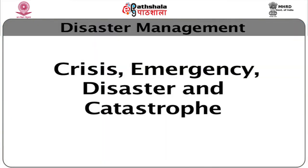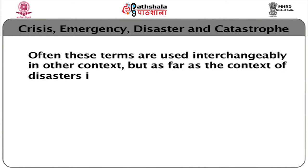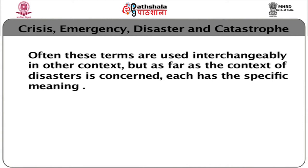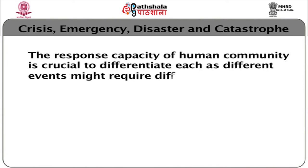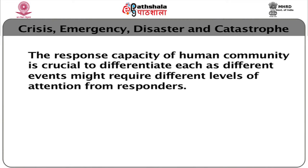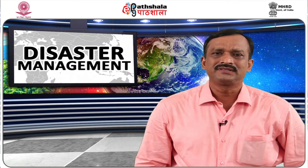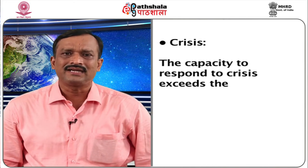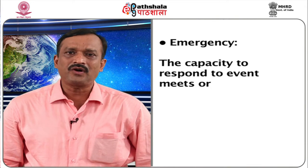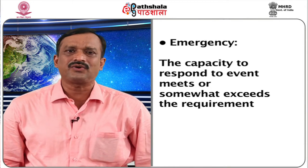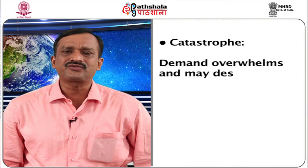Now let us talk about the terms crisis, emergency, disaster and catastrophe. Often these terms are used interchangeably, but each has a specific meaning in the context of disasters. Based on the level of resources required to handle events, they are classified as follows: In a crisis, the capacity to respond exceeds the requirement with capacity to spare. In an emergency, the capacity to respond meets or somewhat exceeds the requirement. In a disaster, event requirement exceeds capacity. In a catastrophe, demand overwhelms and may destroy capacity.